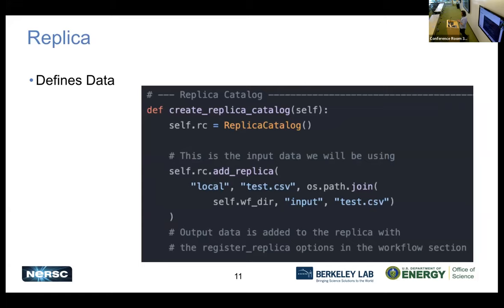The next thing is to define data - what we call the replicas. The replica here is going to be some test CSV that we're going to split up, and we want to say where that is. So this is a local file on the file system, in the inputs directory at the moment. All of our output data can actually be put in when we go on to the next step - we'll register that as replicas independently in a different step.